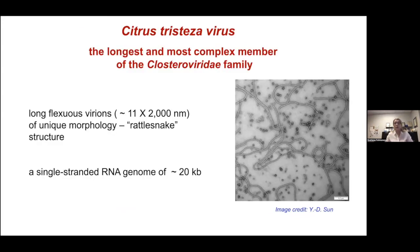Citrus tristeza virus is the longest and most complex member of the closterviridae family. It has long flexuous virions of unique morphology — a so-called rattlesnake structure — built of two capsid proteins that cover the genomic RNA, which is approximately 20 kilobases in size. The natural host range of CTV is limited to citrus, where the virus infects phloem-associated cells. Under laboratory conditions, it can also infect Nicotiana benthamiana. In nature, CTV is transmitted by aphids and by grafting of infected budwood.